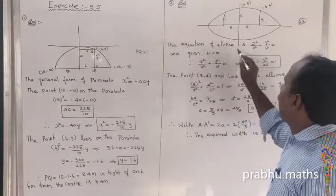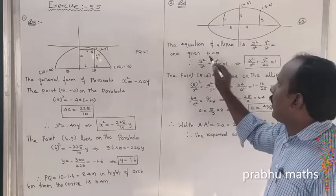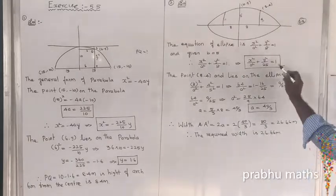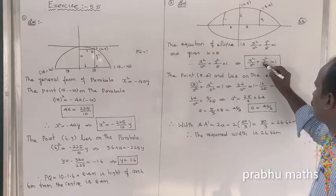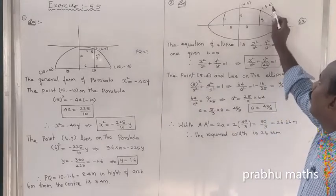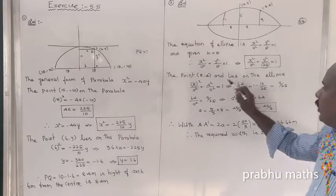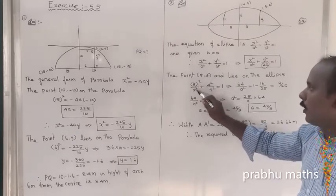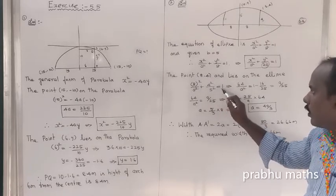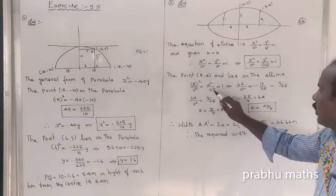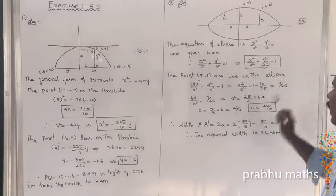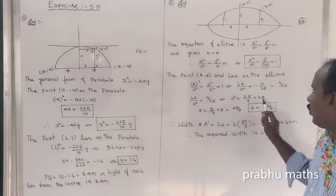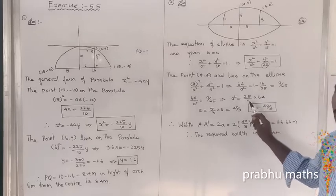The equation of the ellipse is x squared by a squared plus y squared by b squared equals 1. Given b equals 5, so x squared by a squared plus y squared by 25 equals 1. The point (8, 4) lies on the ellipse, so x replaced by 8, y replaced by 4: 64 divided by a squared plus 16 divided by 25 equals 1. Moving to the right side: 64 divided by a squared equals 1 minus 16 divided by 25, which equals 9 by 25.